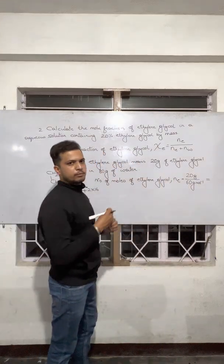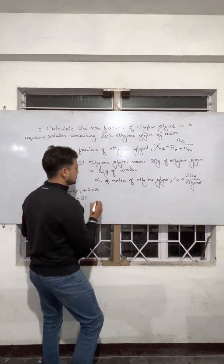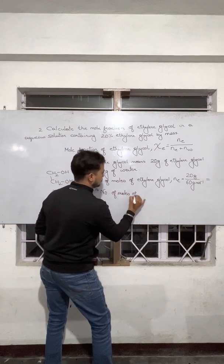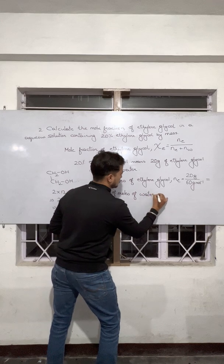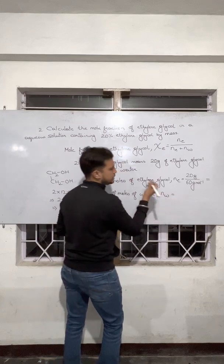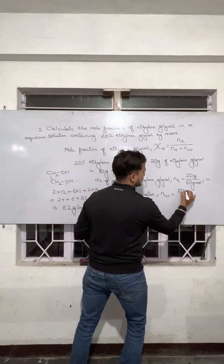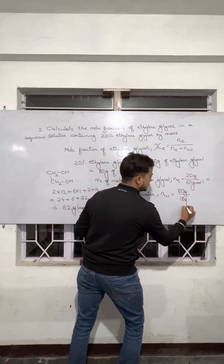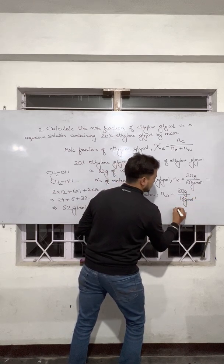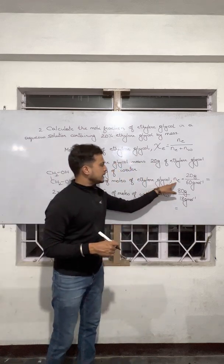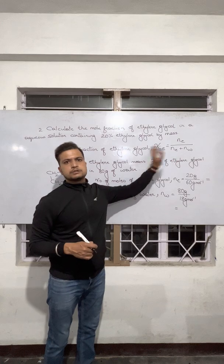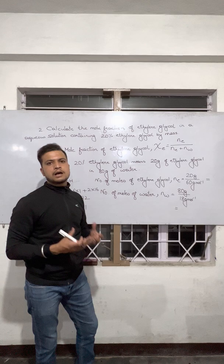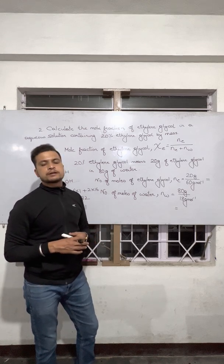Once we get that required number of moles of ethylene glycol, the next thing to calculate is the number of moles of water, N_W. The mass of water is 80 grams and the molar mass of water is 18 grams per mole, so you can easily get N_W. Once you have N_E and N_W, you can easily substitute into the mole fraction equation to get your answer. That is how you find the mole fraction of ethylene glycol.